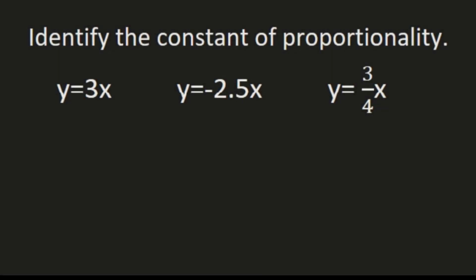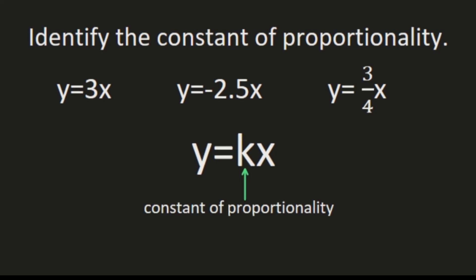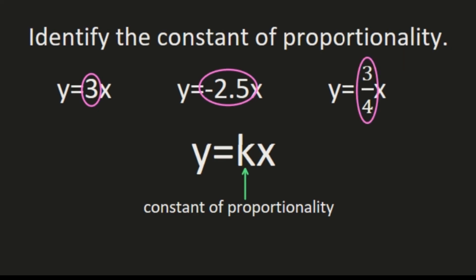You can also identify the constant of proportionality directly from a given equation. Remember, the equation for proportional relationships is y equals kx, where k is the constant of proportionality. For y equals 3x, the 3 is in the position of k, so 3 is the constant of proportionality. For y equals negative 2.5x, the constant of proportionality is negative 2.5 — you must include the negative sign. For y equals three-fourths x, the constant of proportionality is three-fourths.